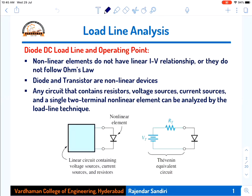Load line analysis of a diode is nothing but the diode DC load line and operating point. You know the IV characteristics or current-voltage characteristics of a P-N junction diode. We have seen how the relationship between current and voltage works under forward biased and reverse biased conditions, plotting a graph in the first quadrant for forward bias and third quadrant for reverse bias — which we call IV characteristics.